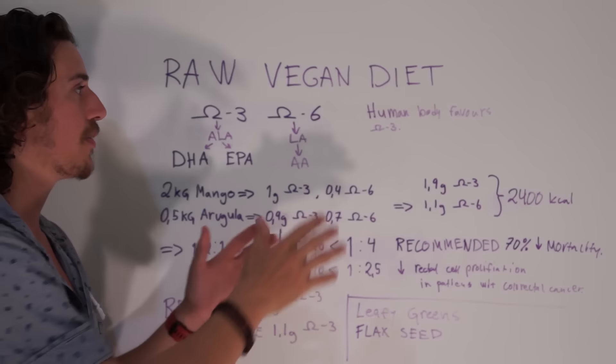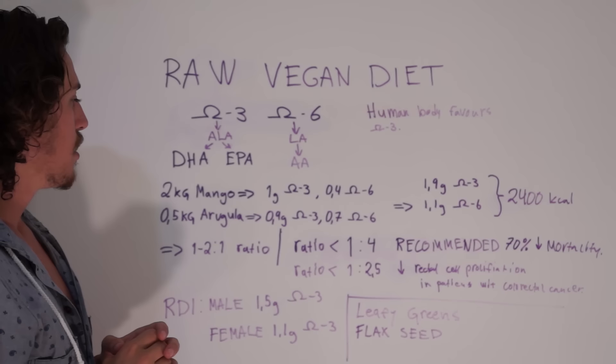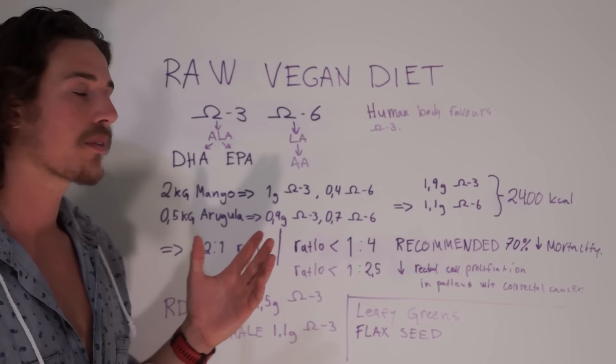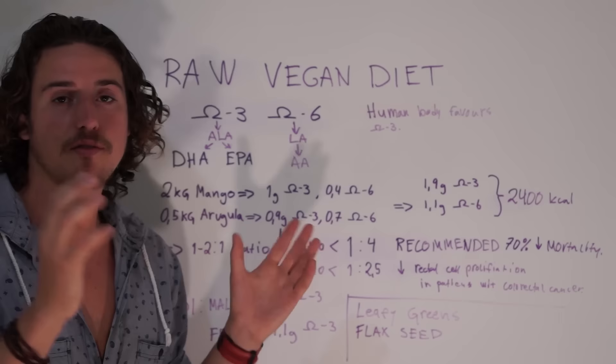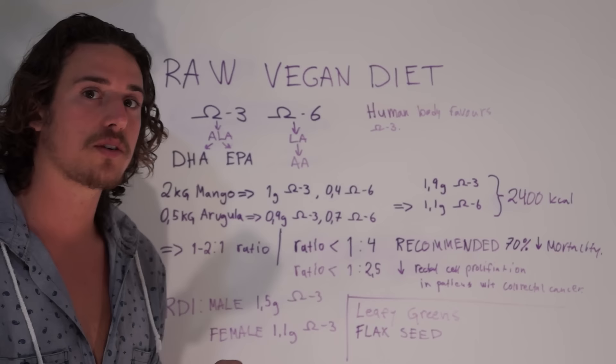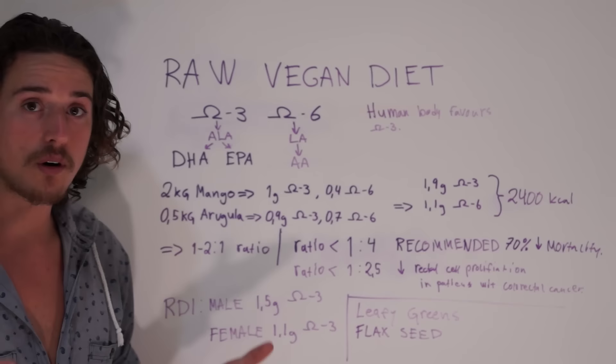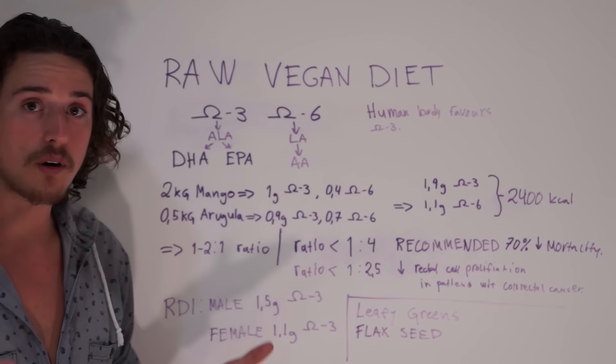It won't convert as much omega-3 to DHA and EPA. But the body favors omega-3 if you have a ratio between omega-6 and omega-3 of 4:1, 2:1, or 1:1. I took an example here for a raw vegan, like a half day.